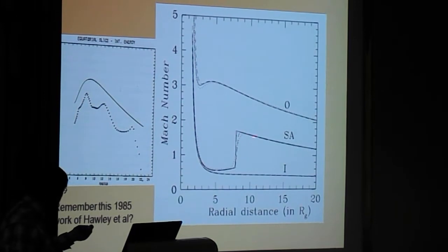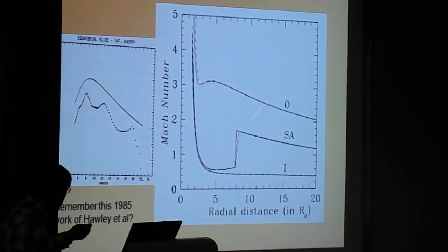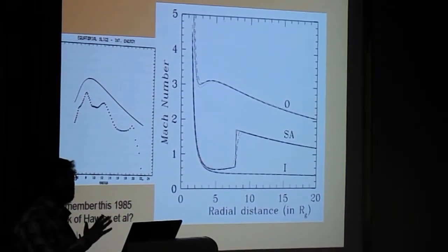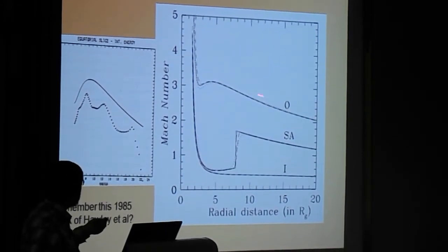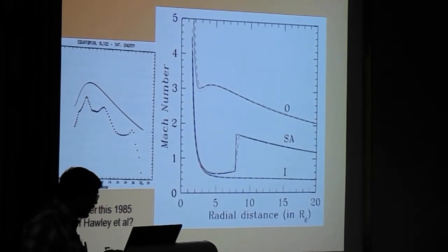One is from Los Alamos group, the other is Korean group, the other is Italian group. All of them produce the shock, at the same place where theory predicted. In other words, where we don't predict shock, the simulation also doesn't show any shock.